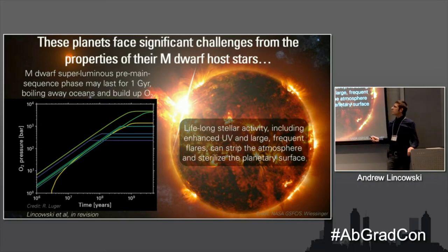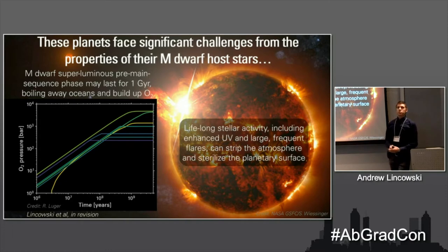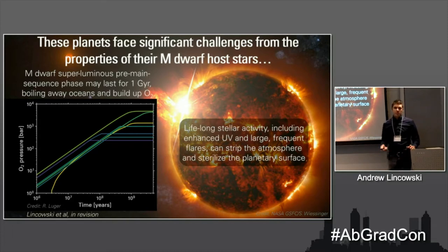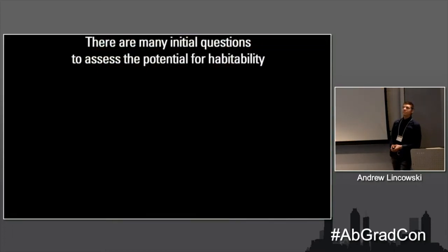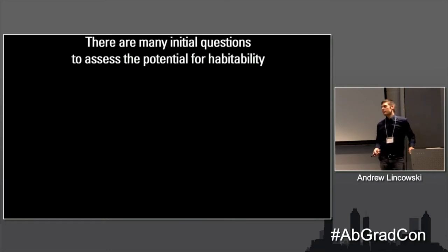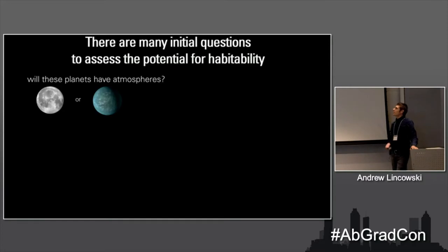But M-dwarf stars have their own problems — a very long, super-luminous pre-main sequence phase. For up to a billion years while the star and planets are forming, the star is much brighter than it will eventually be. Planets in the habitable zone for the main-sequence phase can, during the pre-main sequence phase, boil off tens or hundreds of oceans and build up thousands of bars of oxygen. In addition, lifelong stellar activity can continue to sterilize the surface and strip off the atmosphere.